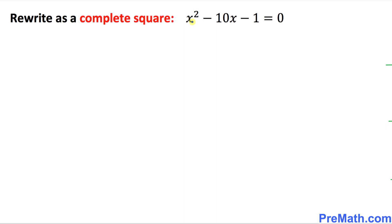Before we complete the square, we want to make sure that we have only x variables on the left hand side. That means this constant negative one must go on the other side. So we're going to end up with x squared minus 10x equals 1, because negative one becomes positive one when we put it on the other side.